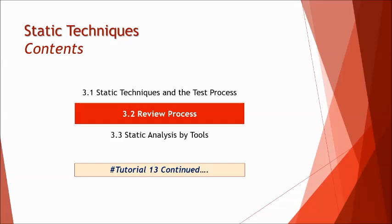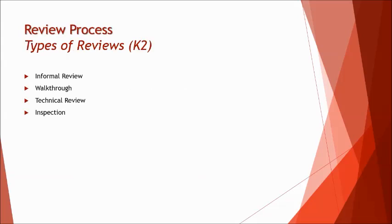In the previous tutorial, we already discussed a lot about the fundamental test process and understanding the six main phases of the review process — that's your formal review process. Following that, we also spoke about a quick look at the four types of review: informal review, walkthrough, technical review, and inspection. So now in this part two of the tutorial, we'll be moving into the details of how these four types of reviews are different from each other.